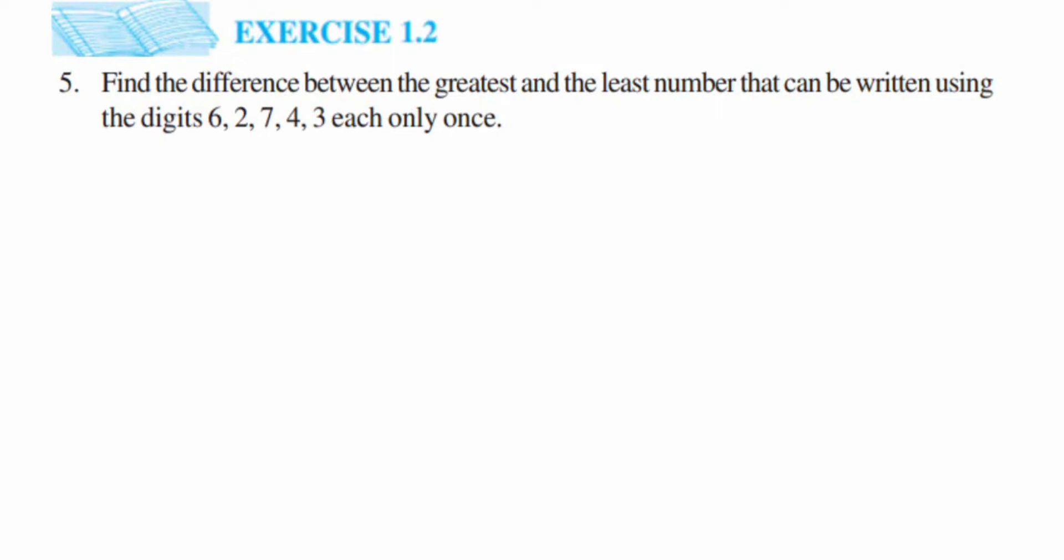Hey everyone, here is a simple question from Exercise 1.2, Question 5. This is from the Knowing Numbers chapter. The question is: Find the difference between the greatest and the least number that can be written using the digits 6, 2, 7, 4, 3, each only once.